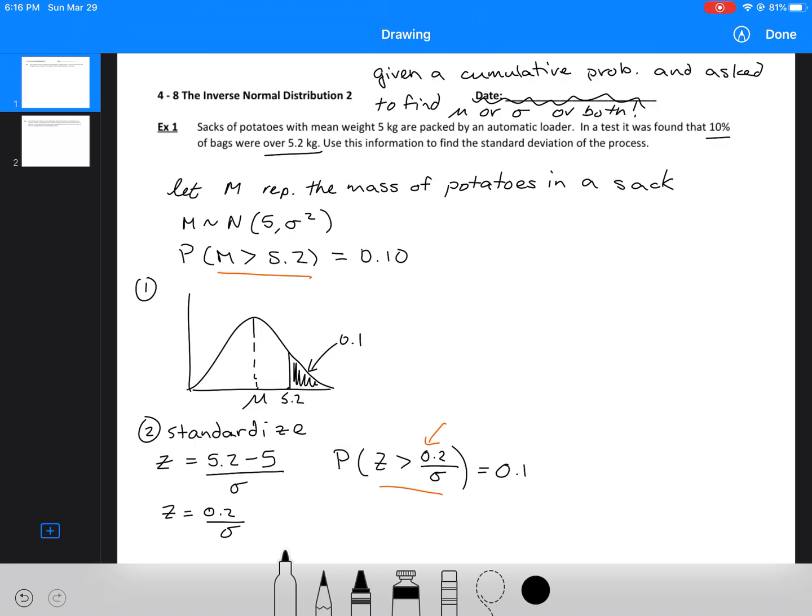If you remember yesterday, we talked about the graphing calculator function inverse normal only working if you had a less than symbol. So if I flip that around, my z value or my position on the x axis is still going to stay the same. But now my probability is going to be 0.9 because the total area underneath the curve has to add up to 1.